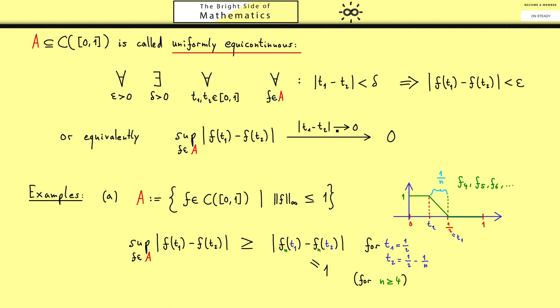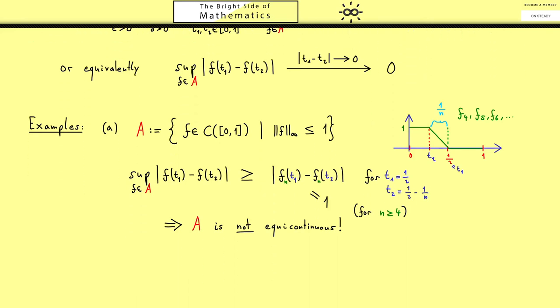However now we have one case where t1 minus t2 is 1 over n so this goes for n to infinity to 0 but the supremum on the left hand side can't go to 0 because it's always bigger than 1. Of course you could do the same thing using the original definition and maybe that's a good exercise for you. Nevertheless the conclusion should be the same: A is not equicontinuous.